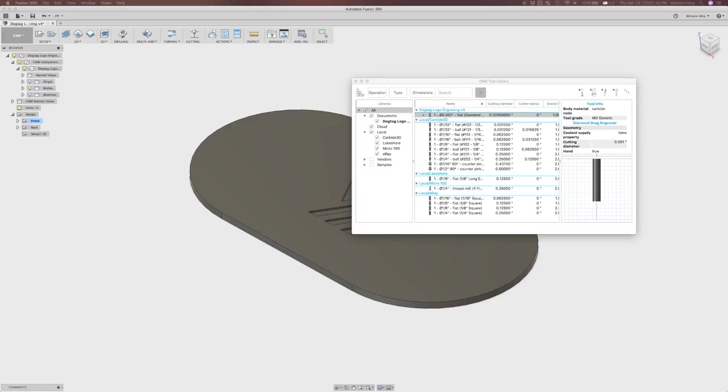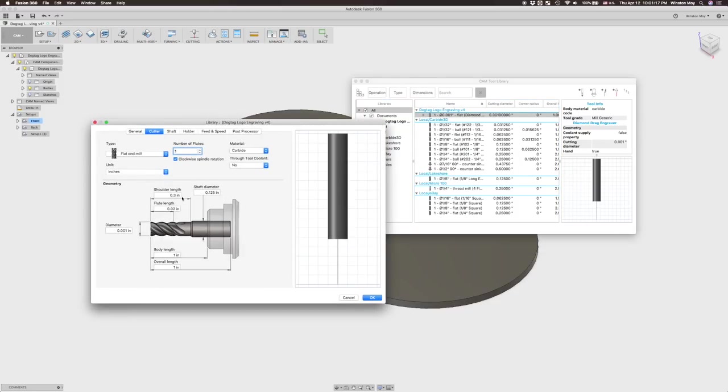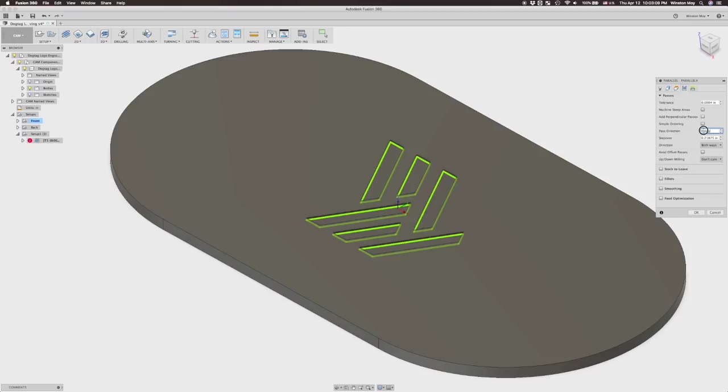Fusion 360's parallel finishing toolpath will work just fine for this. Let me show you how. First, you'll need either a tool with a ridiculously tiny diameter or a chamfer mill in your tool library. Then, you can use it in a parallel toolpath on your desired contours.